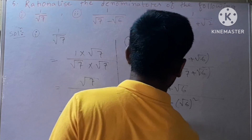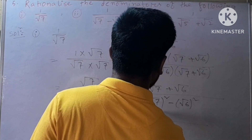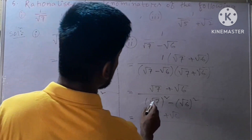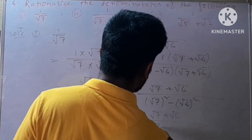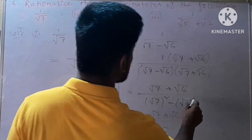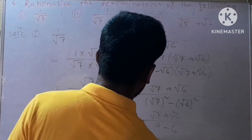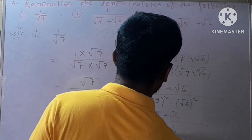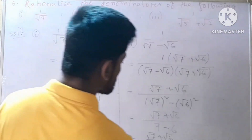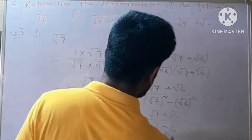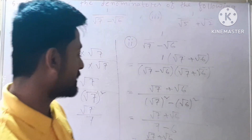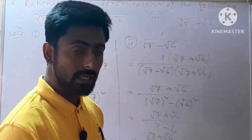Using the formula A squared minus B squared: the numerator is root over 7 plus root over 6, and the denominator gives root over 7 squared minus root over 6 squared, where square and root cancel, giving 7 minus 6, which equals 1. So the result is root over 7 plus root over 6 divided by 1. Since 1 is rational, the denominator is rationalized.